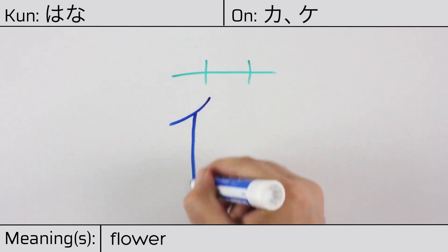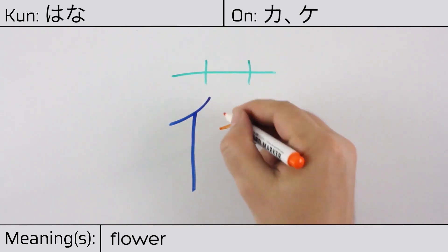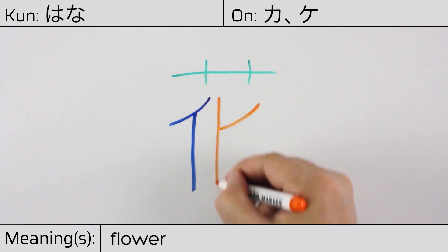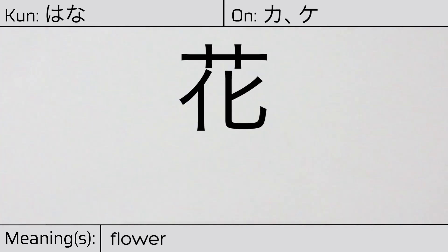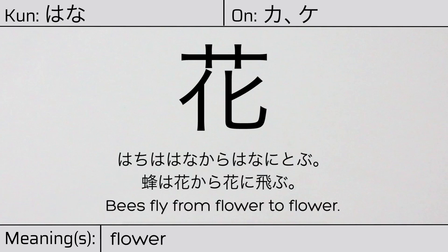You can remember this Kanji by the following hint: The part of a plant that changes most conspicuously. Our example sentence is: Hachi wa hana kara hana ni tobu. Bees fly from flower to flower.